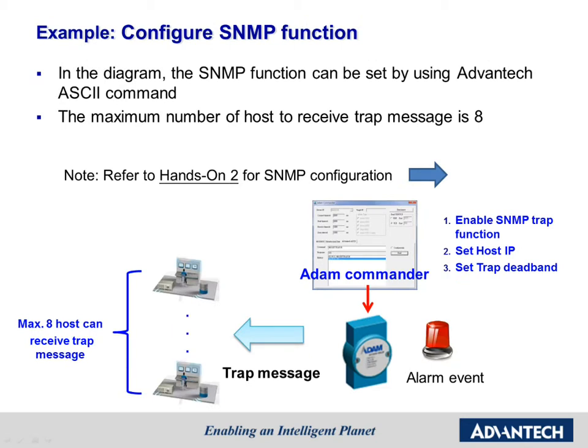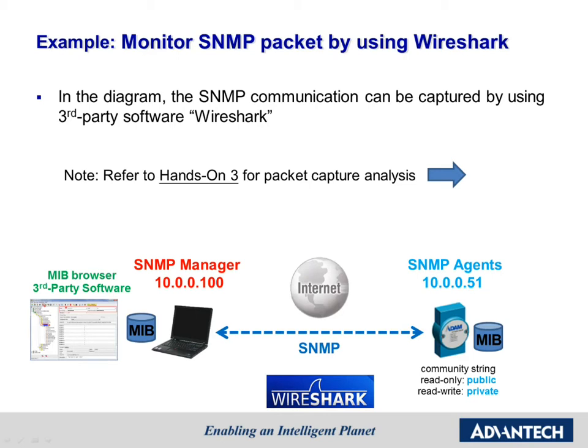Second, we will set the module using the utility and test the trap function. Not only can we get data from ADAM through SNMP query, we can also set the host IP to receive a trap message when some alarms happen. There are some parameters we have to set in the utility, such as the host IP, the trap deadband, and so on. Third, we will use third-party software Wireshark to monitor the SNMP packages. We will use Wireshark to capture some SNMP packages and analyze their content.